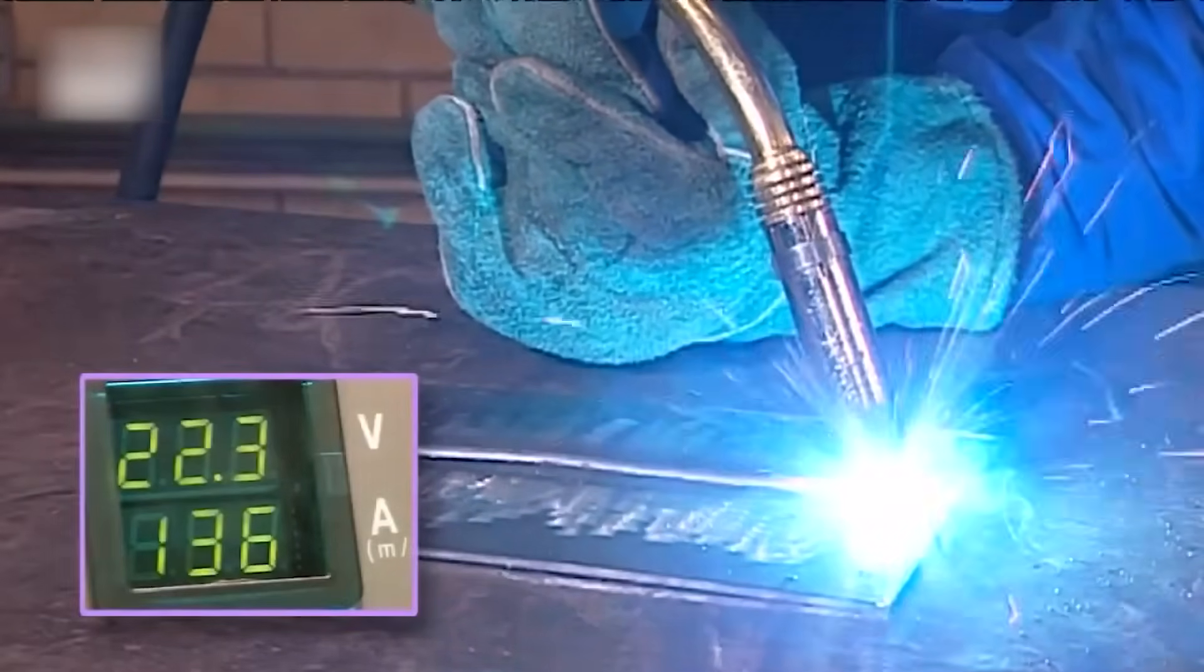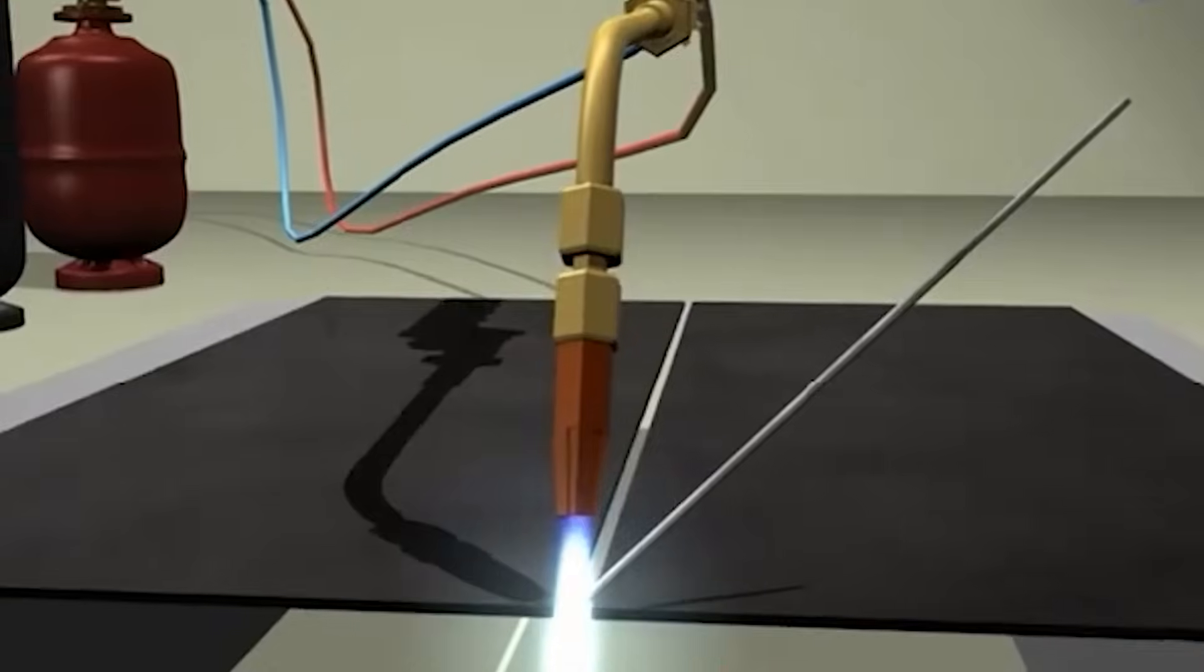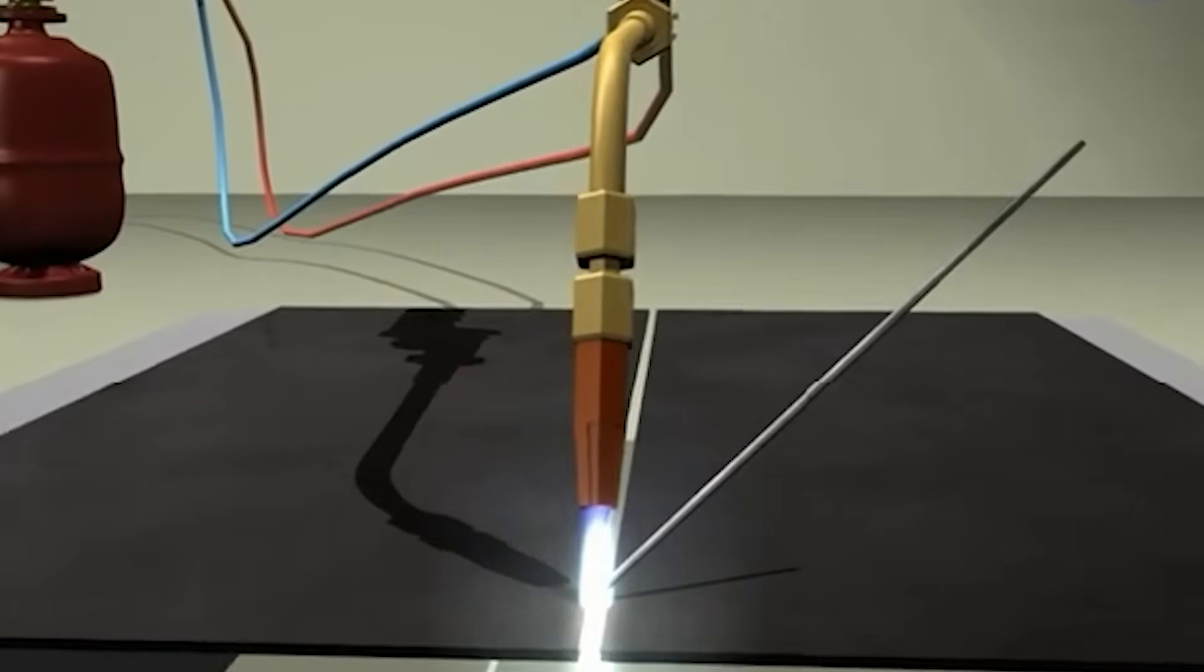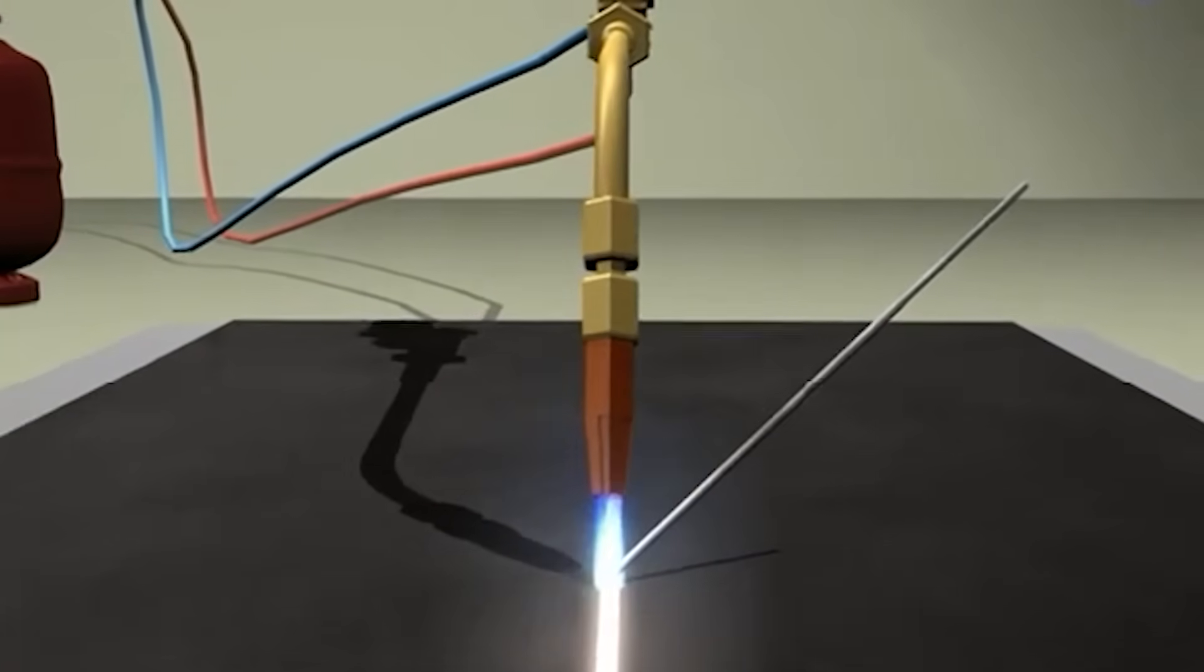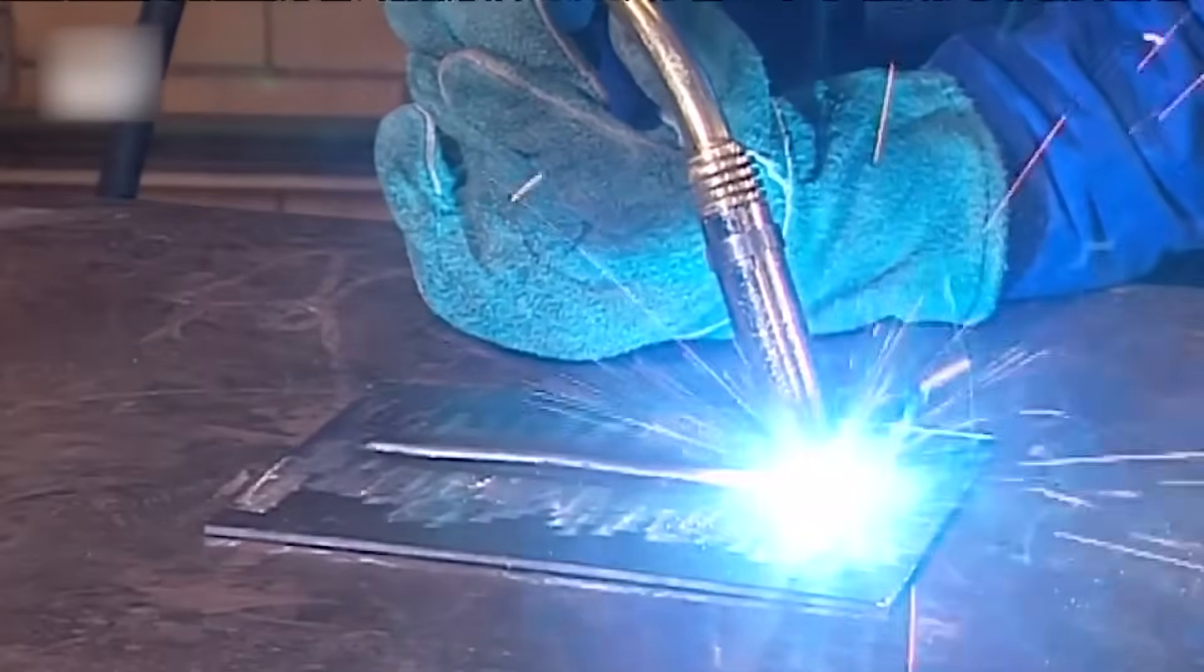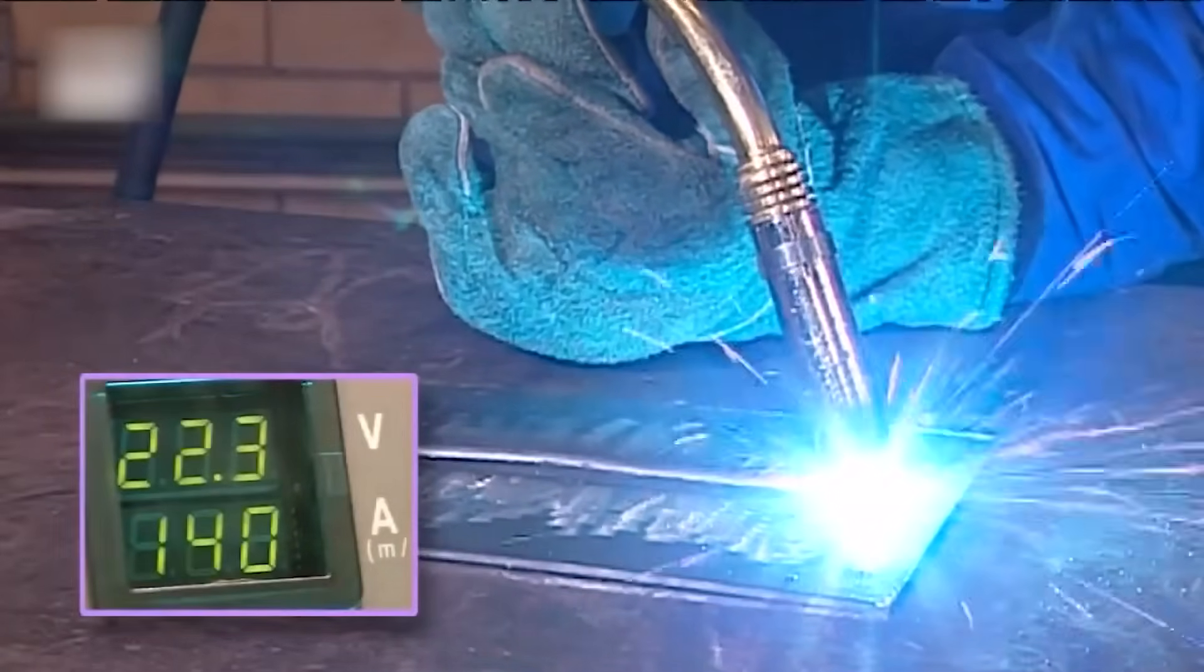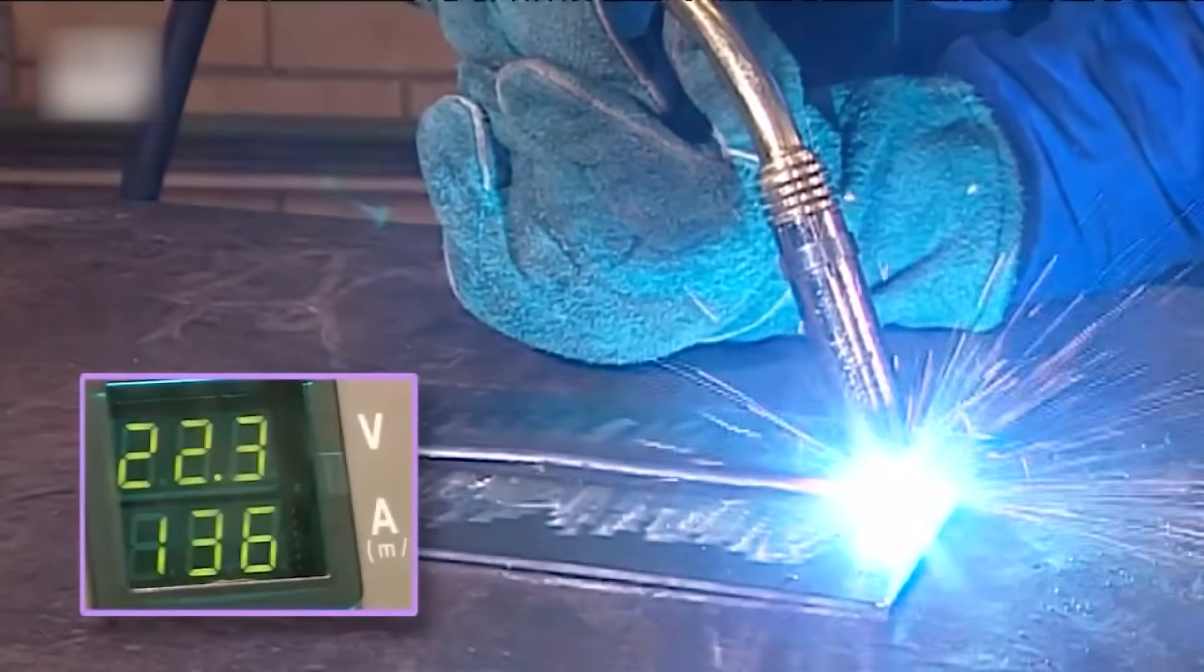A distinct advantage of arc welding over gas welding is the concentration of heat. In gas welding, the flame spreads over a large area, sometimes causing heat distortion. The concentration of heat characteristic of arc welding is an advantage because less heat spread reduces buckling and warping.